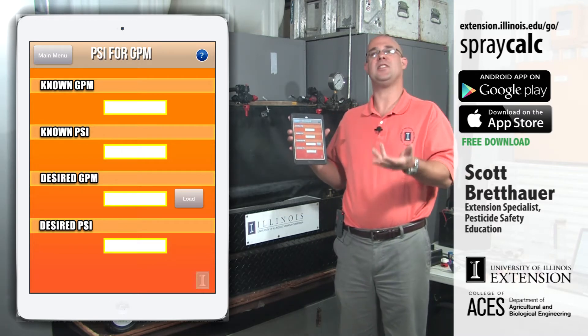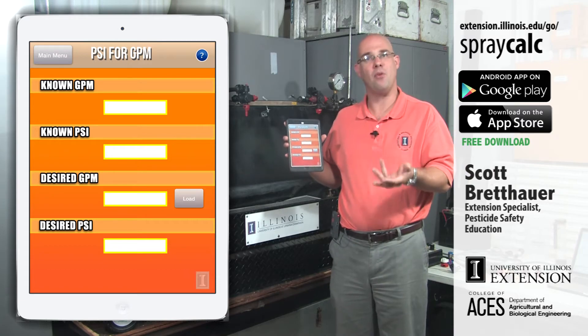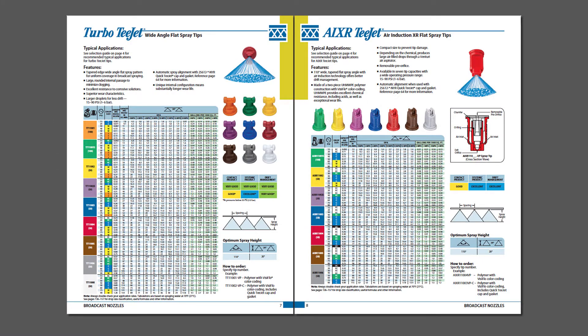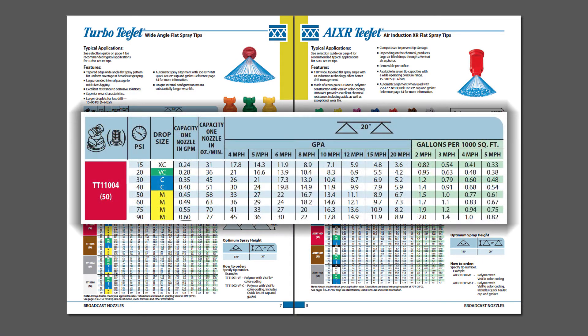For example, let's say I needed a flow rate of 0.44 gallons per minute. If I go back to my Turbo T-Jet catalog page and look through the flow rate column, I don't see that exact flow rate of 0.44 GPM. What I do see is that for the TT1104, at 40 PSI the flow rate is 0.4 GPM, and at 50 PSI it's 0.45 GPM. So I know the required 0.44 GPM is somewhere between 40 and 50 PSI.